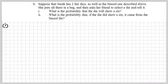This time, she's got two fair dice as well as the biased one which was described above. So she's got three in total, two fair ones and the biased one which we've just been dealing with. She puts all three of them in a bag, and then she asks her friend to select a die and to roll it. First, what is the probability that the die will show a 6, and secondly, what is the probability that if the die did show a 6, it came from the biased die? Pause the video. I'll see you soon.